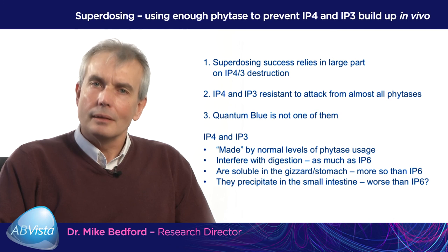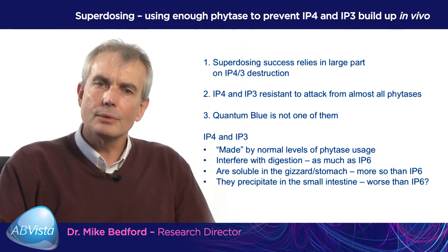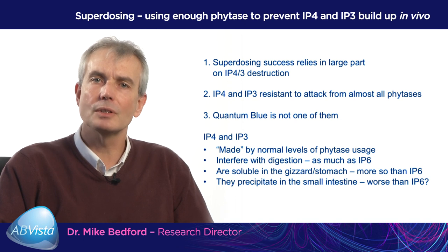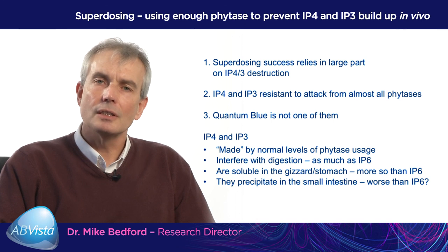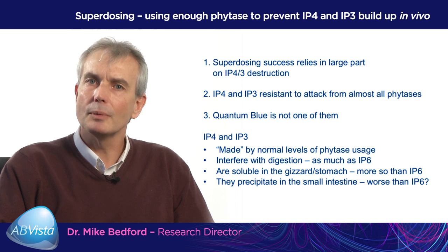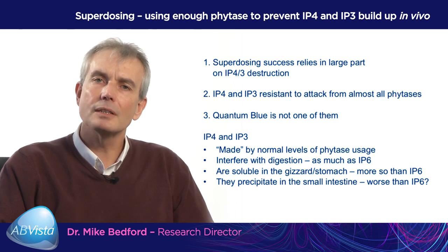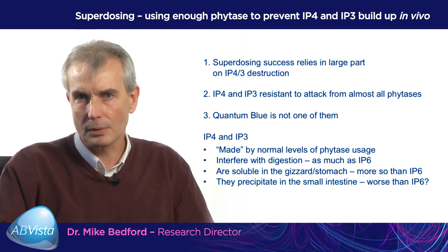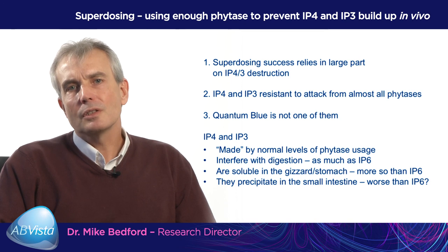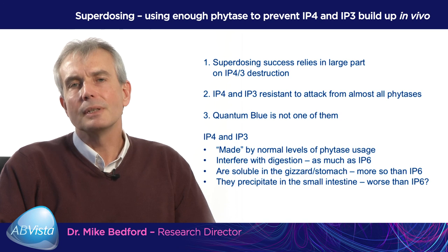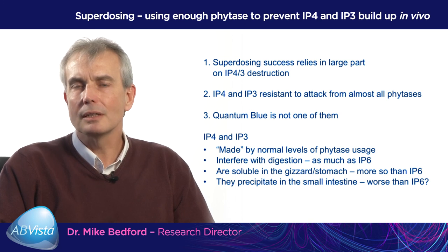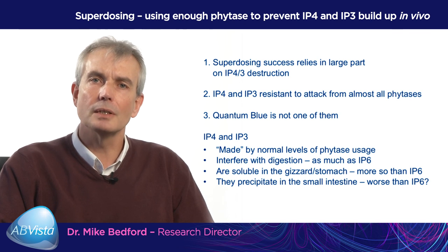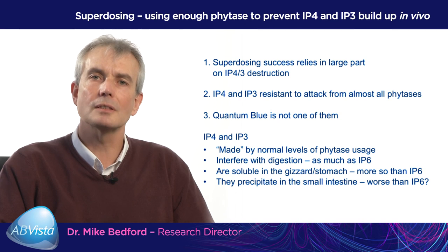With respect to superdosing, I've been focusing on IP4 and IP3. What I'd like to reinforce is that IP4 and IP3 are made by normal phytase usage levels — they are not present in an animal which is not fed a phytase. They interfere with digestion possibly as much as IP6. The problem with IP4 and IP3 is they're very soluble in the stomach and can move easily into the small intestine where they precipitate with zinc and interfere with protein digestion. When we think of superdosing, we've got to think about not just getting rid of IP6, but IP5, IP4 and IP3 as well, because all of these esters play a significant role in reducing the animal's ability to digest its feed effectively.